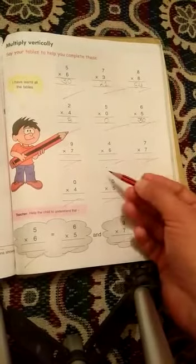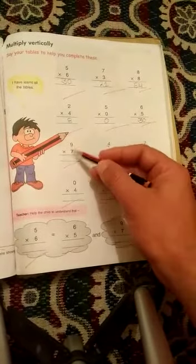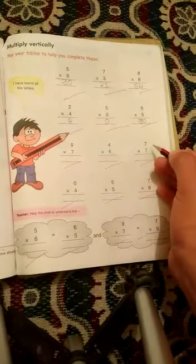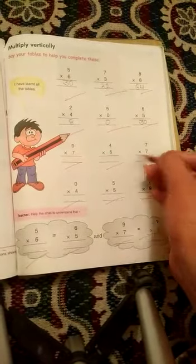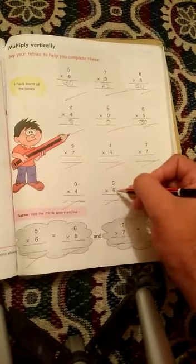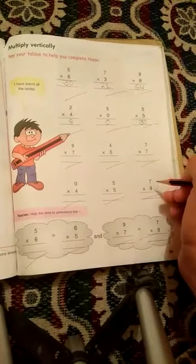Next remaining sums, practice at home. I will read these sums: 9 × 7, then 4 × 6, then 7 × 7, next one is 0 × 4, then 5 × 5, and next one is 7 × 9, okay?